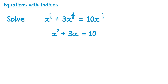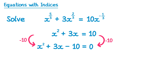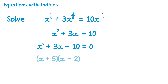So we now have a quadratic equation. Let's subtract 10 from both sides: x squared plus 3x take away 10 equals 0. Factorising this gives (x + 5)(x - 2) equals 0, which gives two solutions: x equals negative 5 and x equals positive 2.